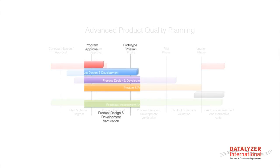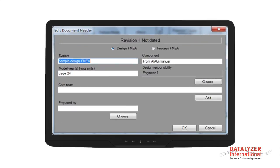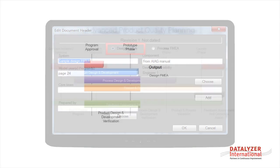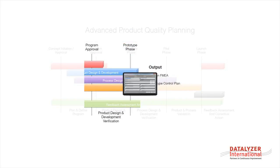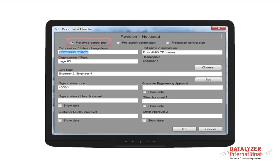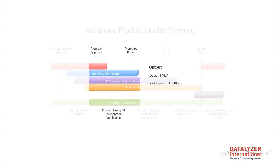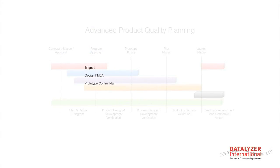During the product design and development phase, FMEA and control planning techniques are used for the first time. The design team will create a design FMEA and the APQP team will produce a prototype control plan. The output documents of this phase will be used as input documents for the next phase.